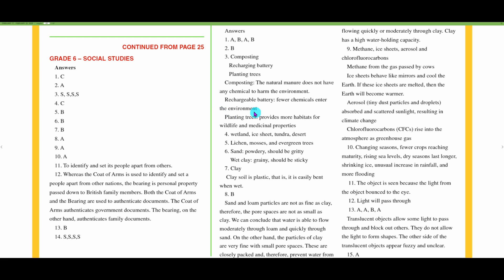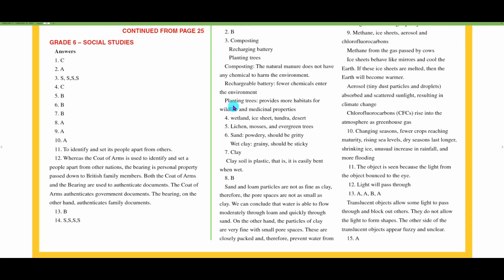Rechargeable batteries have fewer chemicals that enter the environment. If I use a lot of batteries in a flashlight or radio, having rechargeable batteries would allow me to save on the number of batteries that enter the landfill. Planting trees would provide habitats for wildlife and medicinal properties, but also could remove carbon dioxide from the atmosphere. The more trees we have, the more carbon dioxide would be pulled from the atmosphere.